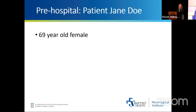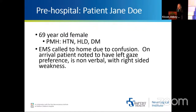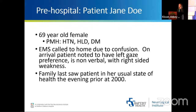We're going to talk about a patient — she's a 69-year-old female with a past medical history of hypertension, diabetes, and hyperlipidemia. EMS was called to her house for confusion, and when they got there, they noticed she had a left gaze preference, was nonverbal, and had right-sided weakness. Family last saw the patient in her usual state of health the evening prior. This is extremely important — from EMS to nursing to anyone talking with family — we really want to know when the patient was last seen completely normal, not when they were found.